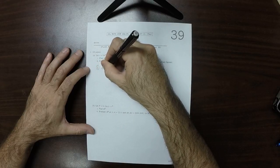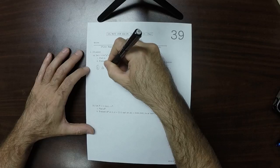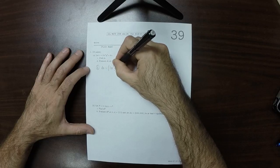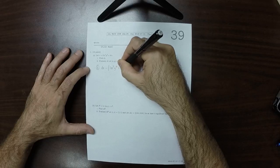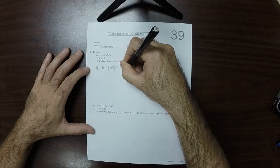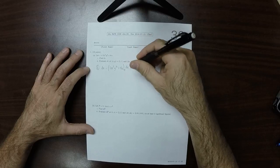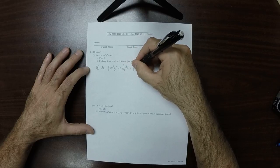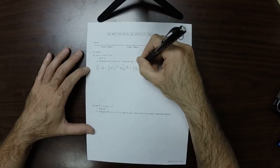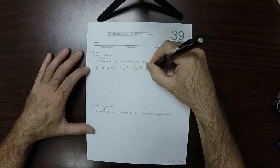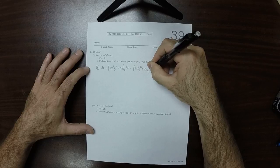Well, dz will be the x partial of this expression, 3x cubed y squared plus 4x, times dx, plus the y partial of this expression, 3x cubed y squared plus 4x, times dy.